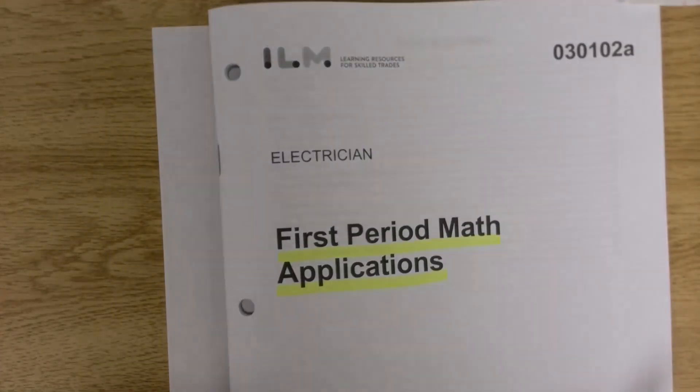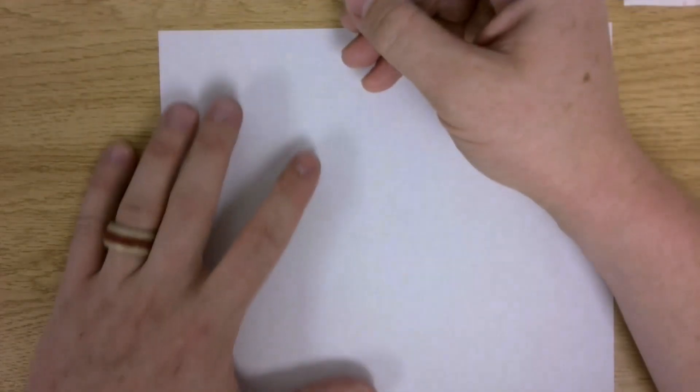The modules, and what's in the modules, is ultimately what you're going to be tested on. Everything in the modules is a potential test exam question, or a potential question on your TQ, which you'll be writing at the very end. So, let's get into first period math applications. It's mostly a review from high school mathematics and all other math, really.